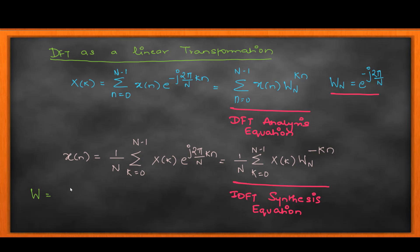This is the mathematical proof for DFT and IDFT, and how you represent DFT as a linear transformation matrix form using this substitution. I will see you with more numericals and more mathematical proof on DFT. Thank you.